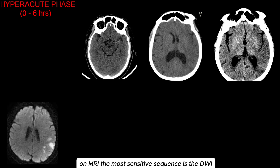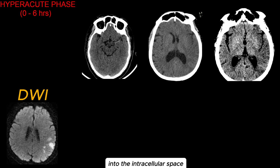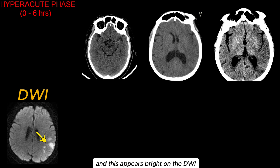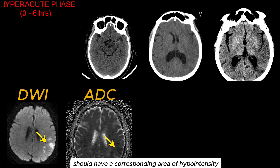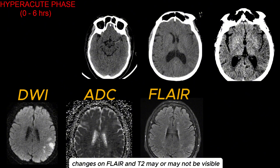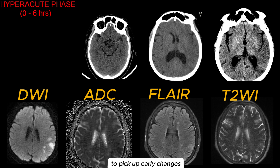On MRI, the most sensitive sequence is the DWI. In acute ischemic stroke, there is an influx of water molecules into the intracellular space, which means reduced movement, and this appears bright on the DWI. The ADC sequence should have a corresponding area of hypointensity confirming the diffusion restriction. Changes on FLAIR and T2 may or may not be visible, but the FLAIR sequence is more sensitive to pick up early changes.